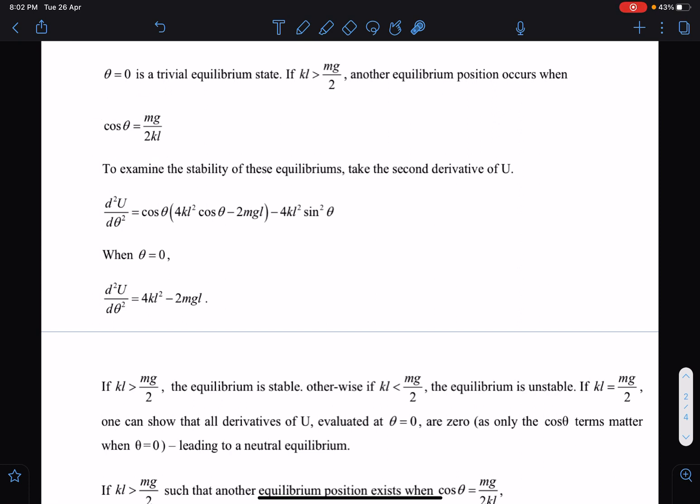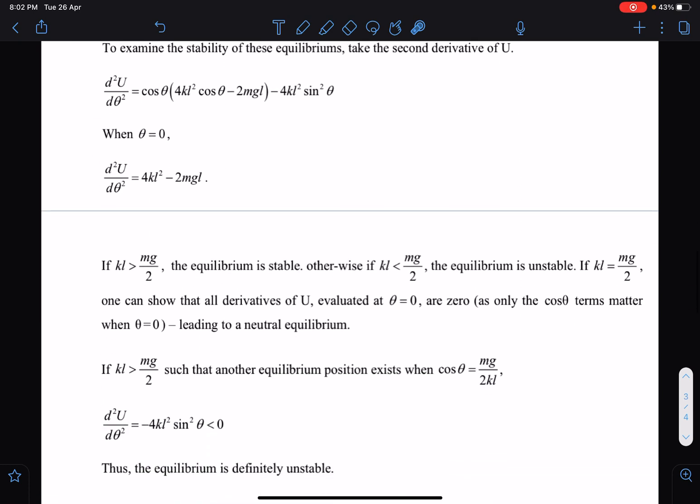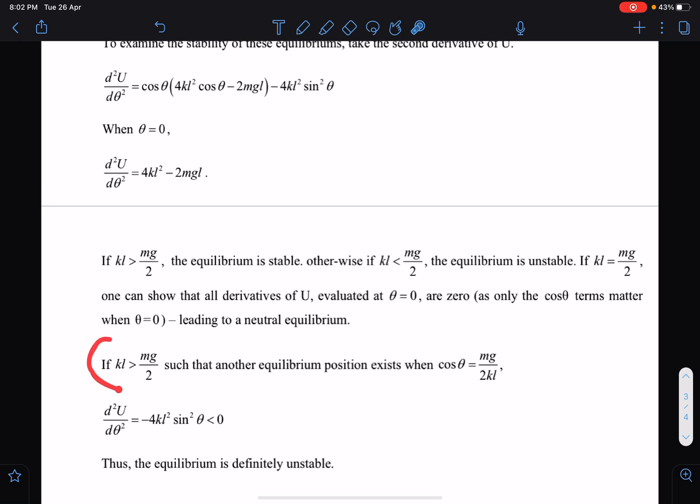Now another part here is when theta is mg/2kl, we already know that mg should be less than 2kl, or kl should be greater than mg/2. In this situation, this is another equilibrium. If I check, if I substitute this value in this situation, I am finding that this is always negative. You can easily see, you can always see here,